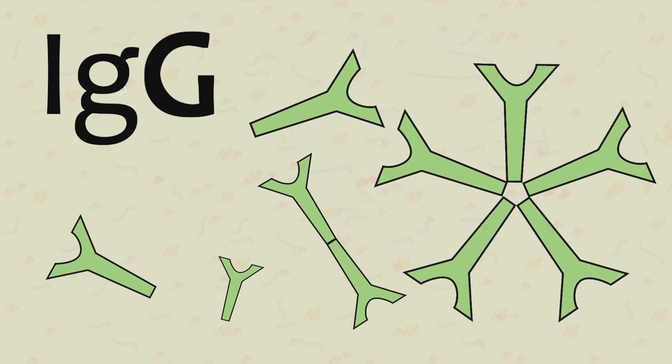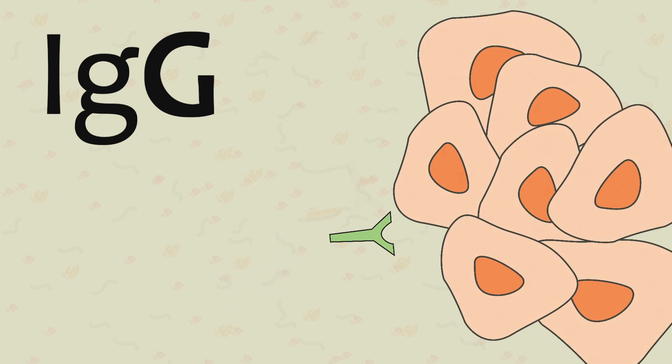IgG is the smallest of the Ig molecules, allowing it to easily migrate into the tissues of the body. Only 45% are found in the blood.